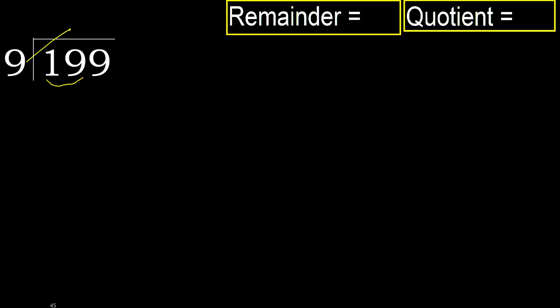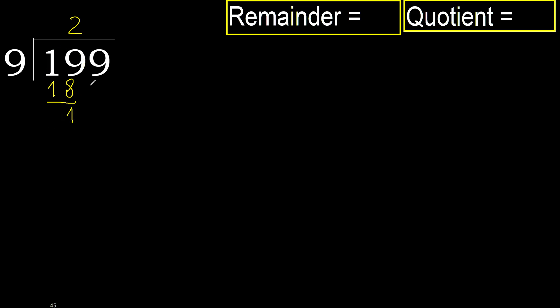Multiply by which number is nearest to 19 but not greater. 9 multiplied by 3 is 27, which is greater. Multiply by 2: 18 is not greater. Subtract: 19 minus 18 is 1.